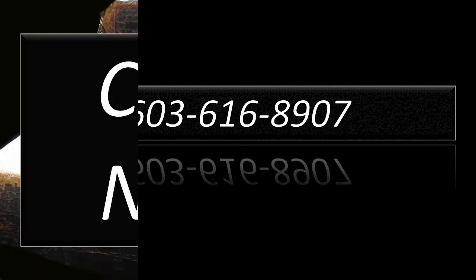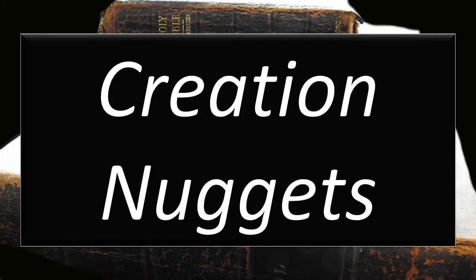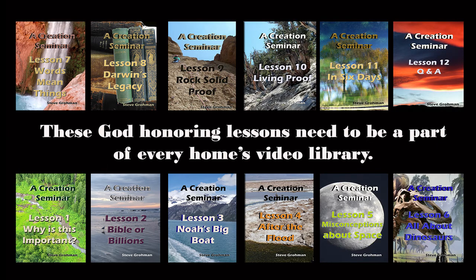Each of the nuggets are three to five minutes in length. We want to encourage you to consider purchasing the entire series, A Creation Seminar, on USB flash drive. There are 12 lessons. Each lesson is approximately an hour and a half to three hours long. This means that there is over 26 hours of information available to help you and your family grow and learn more about God's beautiful creation and be able to stand against the evolutionists when they try to change your children's way of thinking. Give yourself information to be armed to be able to answer your children's questions.